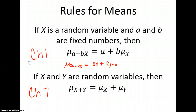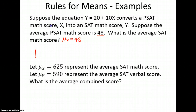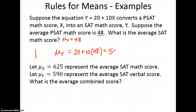Now we are in Chapter 7 and talking about multiple random variables. Suppose the equation Y equals 20 plus 10X converts a PSAT math score into an SAT math score. The average PSAT math score is 48, so the mean of X is 48. Find the mean of Y. We know it's going to multiply by 10 and add 20, so we do 20 plus 10 times 48, which is 500. So the mean SAT score is going to be 500.